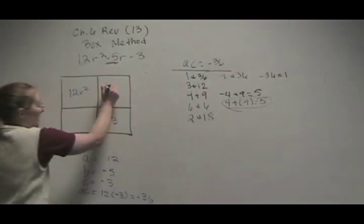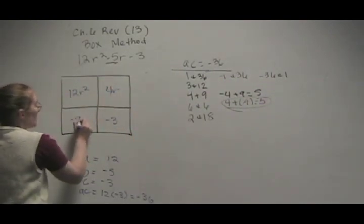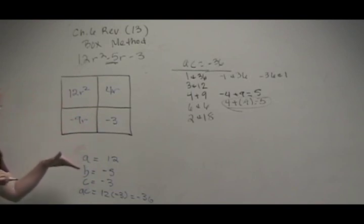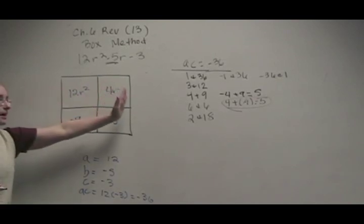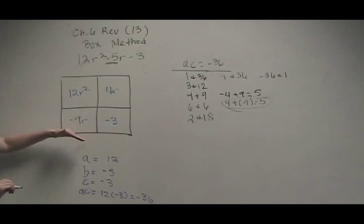So we've got a 4R and a negative 9R. It doesn't matter where you put these as long as you get them in these two boxes. Now what we're going to do is we're going to factor, we're going to pull out the common terms going this way horizontally and this way vertically.